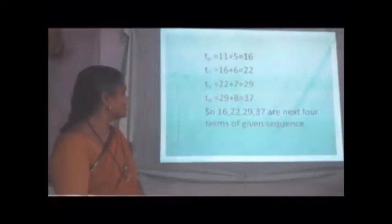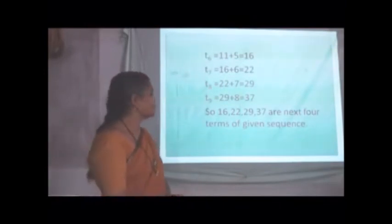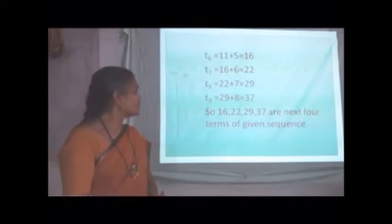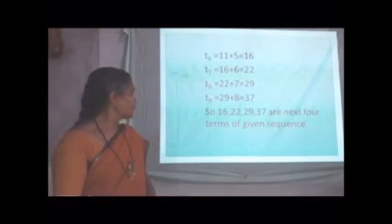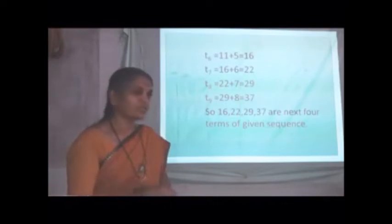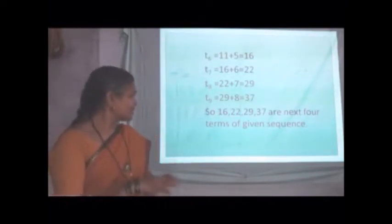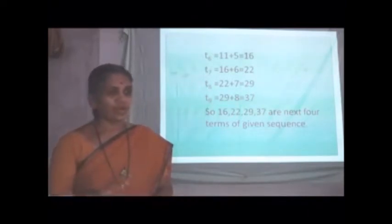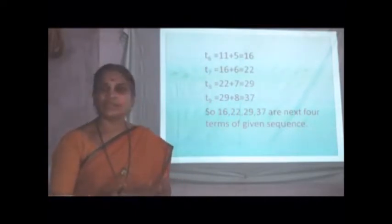T6 is equal to T5 plus 5 means 11 plus 5 is equal to 16. 7th term T7 is equal to 16 plus 6 is equal to 22. T8 is equal to 22 plus 7 is equal to 29. T9 is equal to 29 plus 8, 37. And so, next four terms of given sequence are 16, 22, 29 and 37.